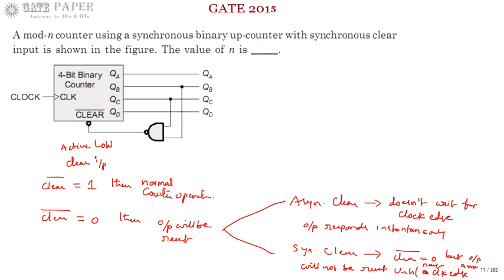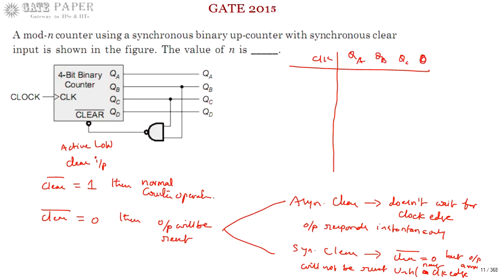Now we will see: if the input is synchronous clear, what is the mod value? If it is asynchronous clear, what is the mod value? Starting from the clock, we have Q3 down to QA, QB, QC, QD. We also track the reset bar value.